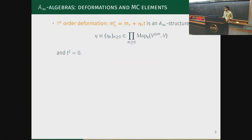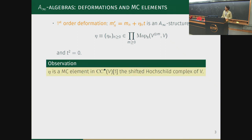A deformation of this structure is a perturbation of the multiplication. A first order deformation is a perturbation m_n' = m_n + η_n · t where t² = 0. Imposing the A-infinity relations on m_n' and concluding that η is a Maurer-Cartan element in the shifted Hochschild complex gives the association between deformations and Maurer-Cartan elements.